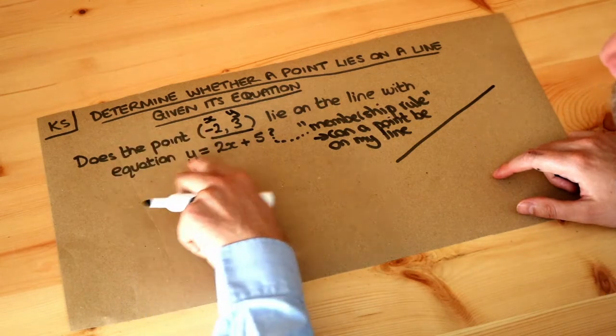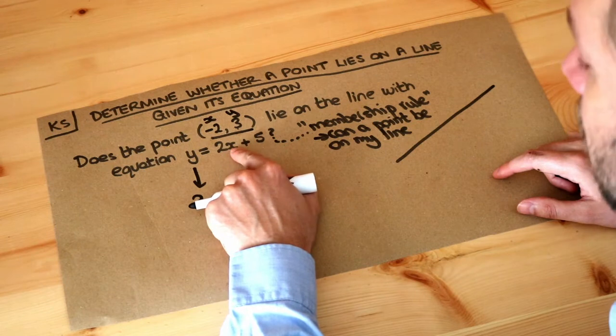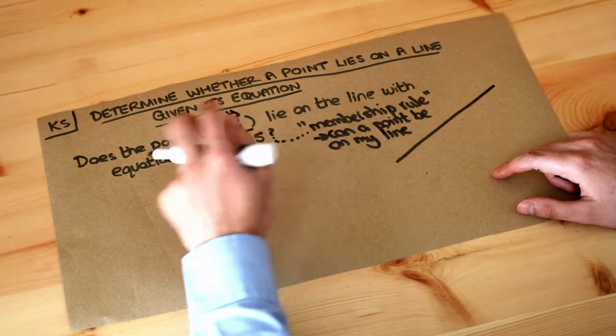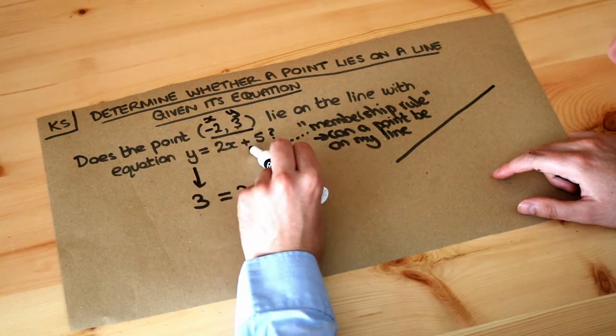So what is the y? The y is 3, and that equals 2x. 2x means 2 times x, so it's 2 times -2, and then we're adding 5.